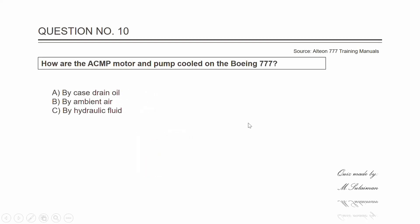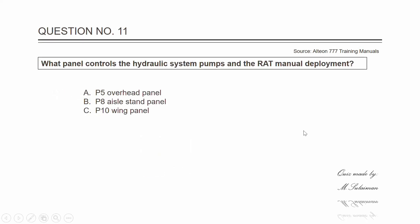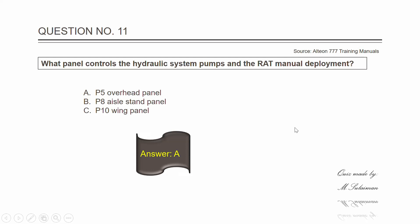Question number ten: how are the ACMP motor and pump cooled on the Boeing 777? The answer is A — by case drain oil. Question number eleven: what panel controls the hydraulic system pumps and the RAT manual deployment? The answer is A — the P5 overhead panel.